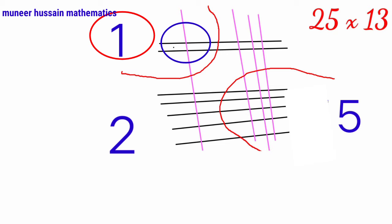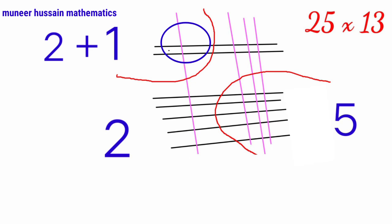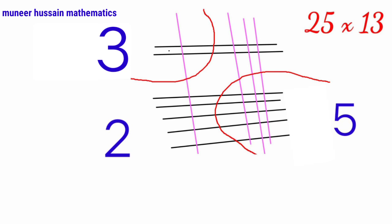Now we shall count the point of intersection of top left. These are 2. 2 plus 1, 3. So our answer will be 325.